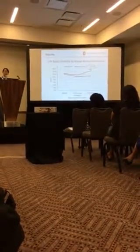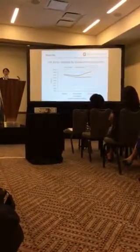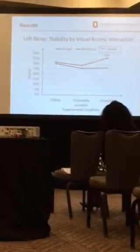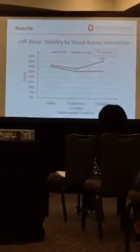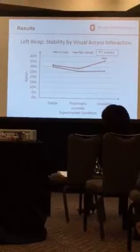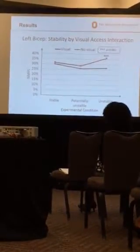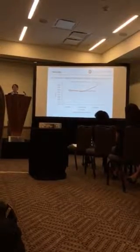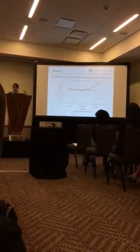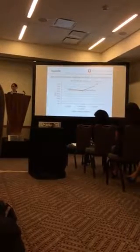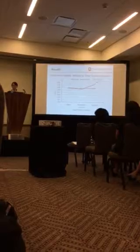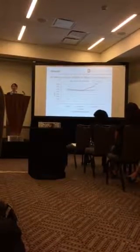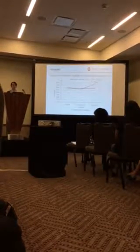We found an interaction effect between visual access and load stability conditions for the left bicep and left anterior deltoids. Visual access might not make a big difference when people are handling stable and potentially unstable loads. However, being able to see the load could significantly lower the EMG responses in these two muscle groups when there is a load shift happening.